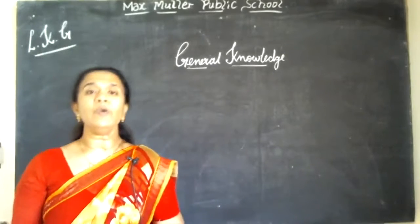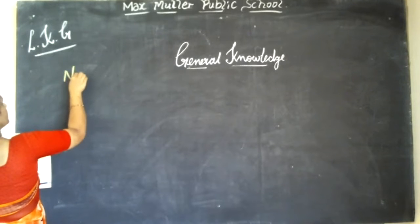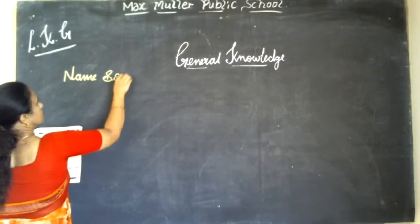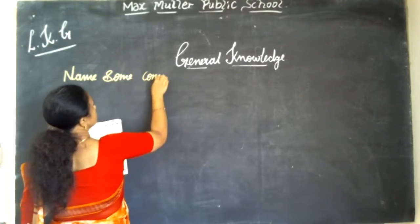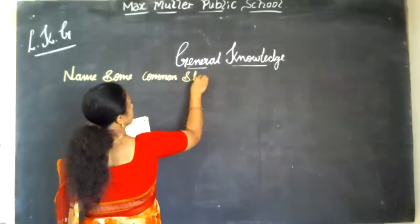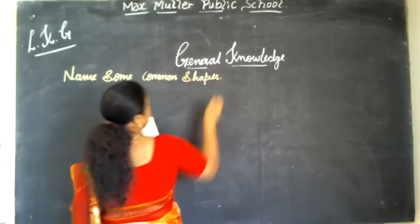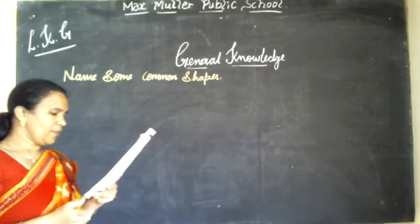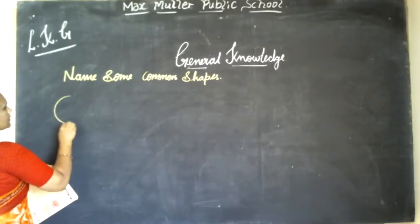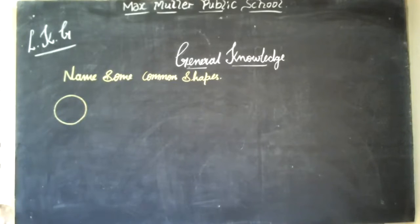Name some common shapes. You have to name some common shapes. First is circle. What is this? Circle.